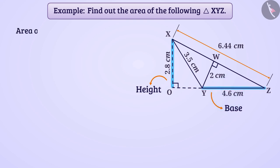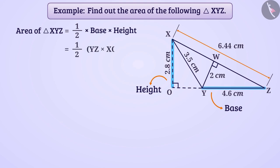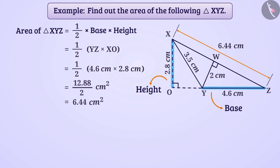So, the area of triangle XYZ will be equal to half multiplied by base multiplied by height, which is equal to half multiplied by YZ multiplied by XO — that is, half of 4.6 cm multiplied by 2.8 cm. On solving this, we get the area of triangle XYZ as 6.44 cm².